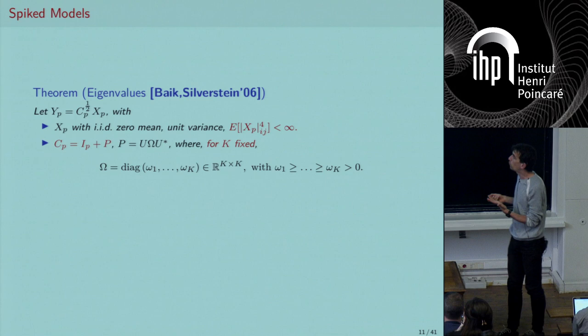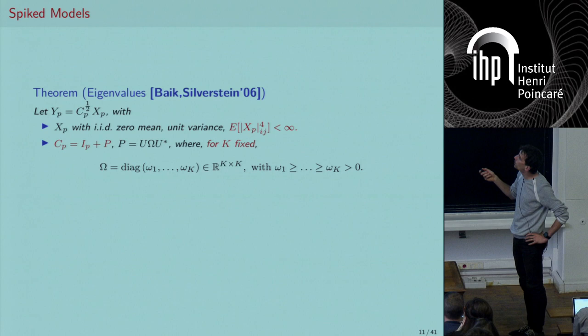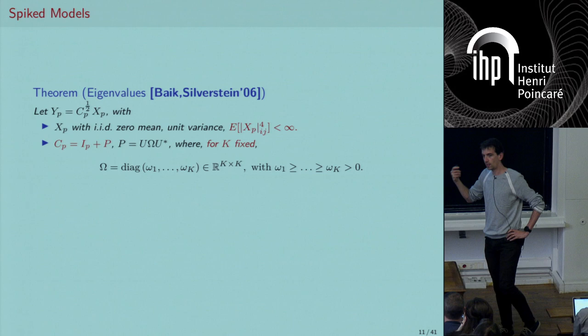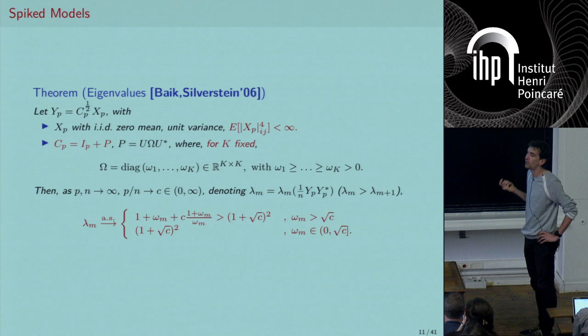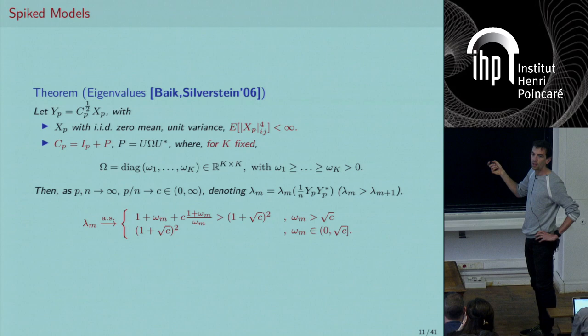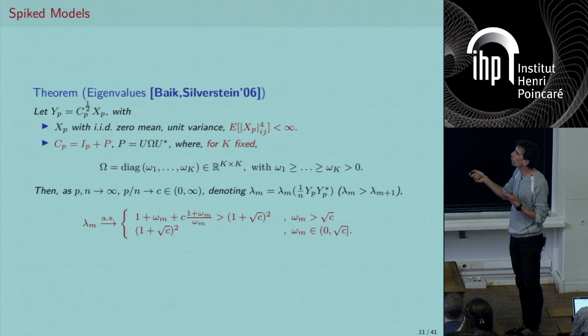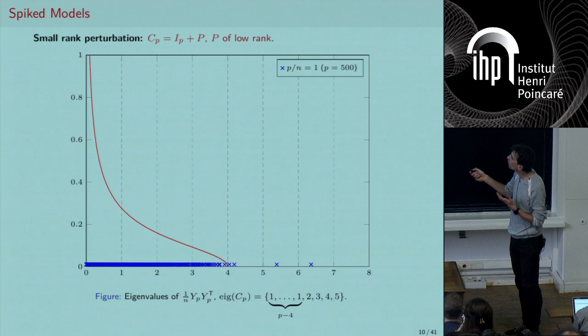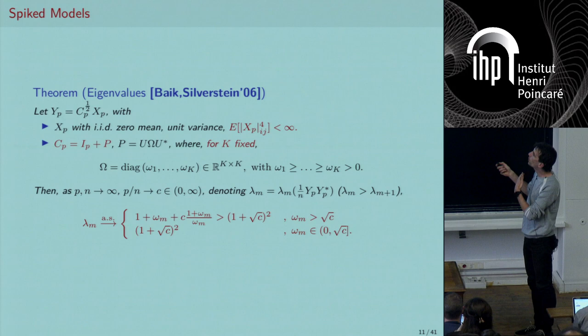We know how to characterize this precisely. With C equal to identity plus P, and P having eigenvalues ω_1 through ω_k, we know exactly how to characterize the eigenvalues of the corresponding sample covariance matrix. There's a phase transition: if ω_m is strictly smaller than √(p/n) = √c, then asymptotically the m-th largest eigenvalue of Ĉ_p converges to the right edge of the Marchenko-Pastur support — it won't be seen outside.